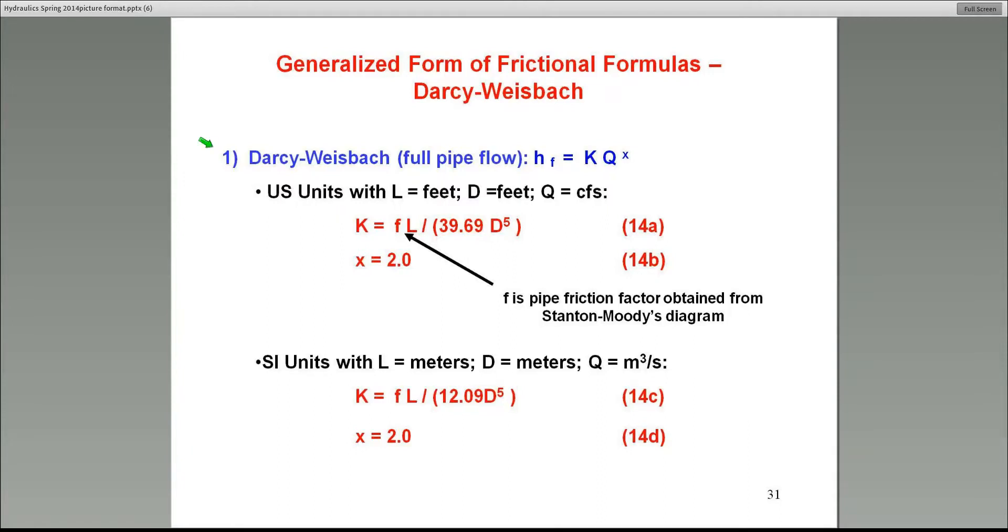The first one is for Darcy-Weisbach equation. I will not emphasize that equation too much here, but nonetheless, you should know when you go to solve some problems how to use this equation. This is head loss equal to K, Q to the power of x again, where x is 2.0. And here's the K value. f, as you all know, is the friction factor in the pipe, typically obtained from Stanton-Moody's diagram.